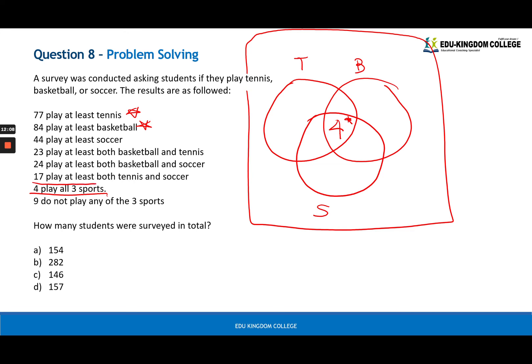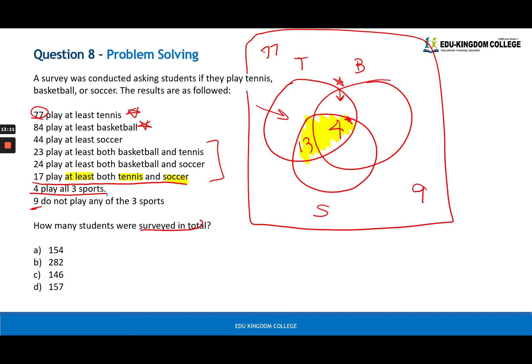So 17 play at least both tennis and soccer. What does that mean? That means that in this bit here, in the tennis circle there, they will play at least both tennis and soccer. So they can either play just tennis and soccer, or they can play tennis, soccer, and basketball. So that highlighted bit will add up to 17, which means that the inside here is 13. And you're going to work through all of that with these three. And at the end, you know that 77 will play tennis. You will find this bit out here. So you can minus it from 77 and find this bit here. And remember nine don't play any sports. You have to add the nine at the end to find how many were surveyed in total.